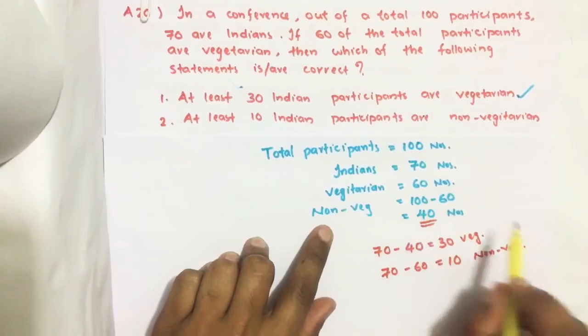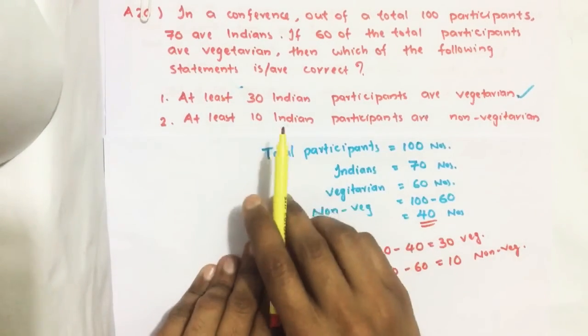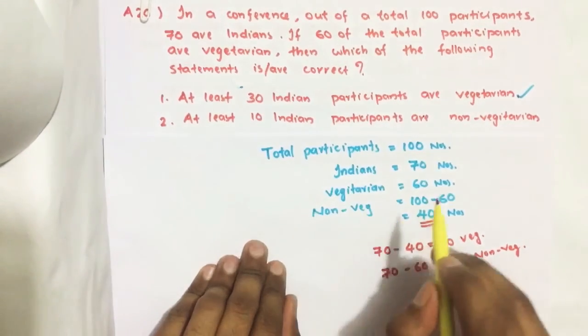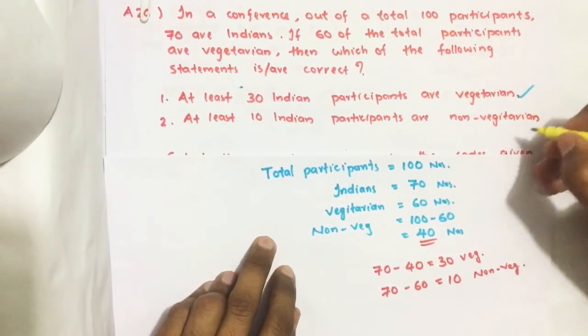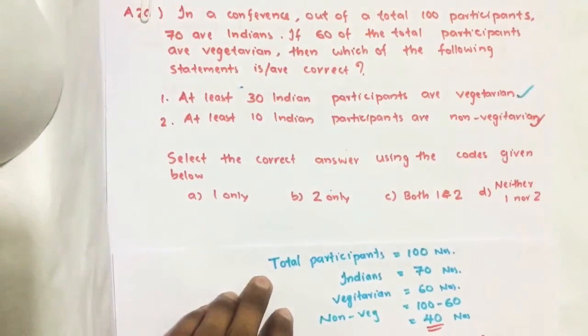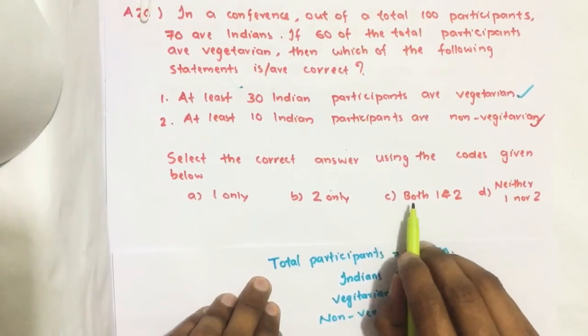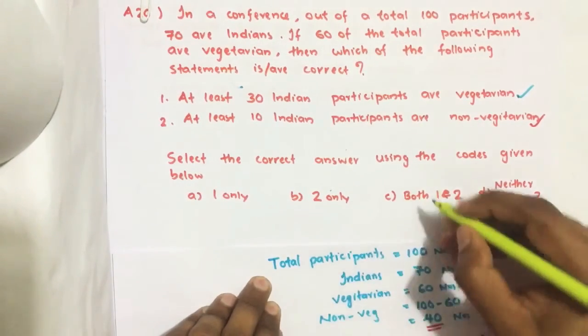That means there will be at least 10 number of people who are non-vegetarian from India. So that means there will be at least 10 Indian participants who are non-vegetarians. So this statement is also true. So our answer is both 1 and 2 are correct.